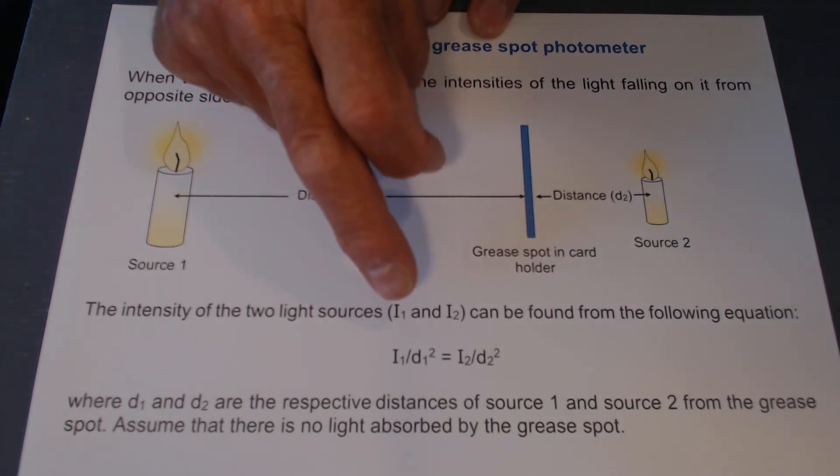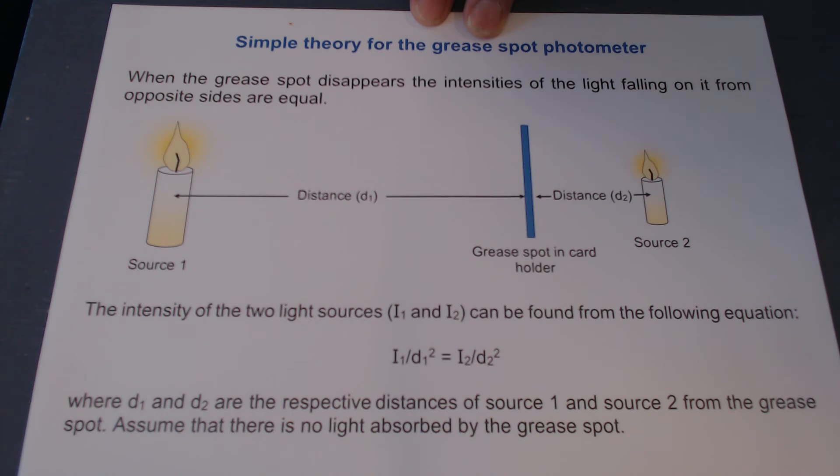You then apply the formula i1 over d1 squared equals i2 over d2 squared, and hence you can calculate the ratio of i1 to i2 or i2 to i1. And if you know the intensity of i1, you can calculate the intensity of i2.